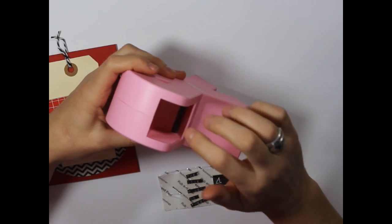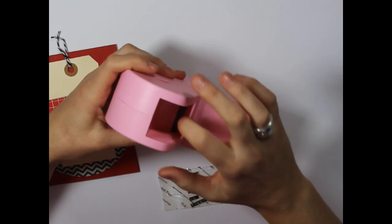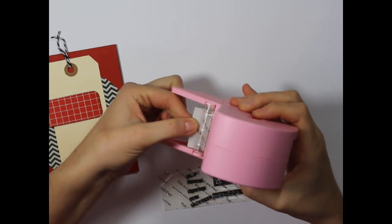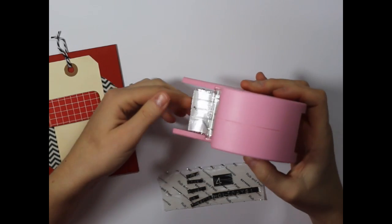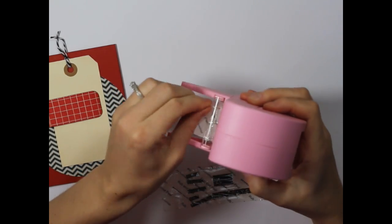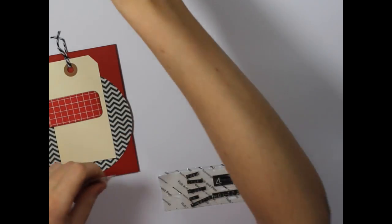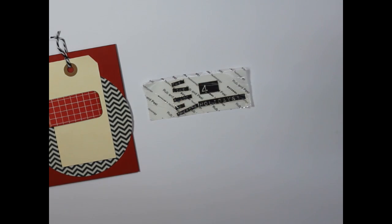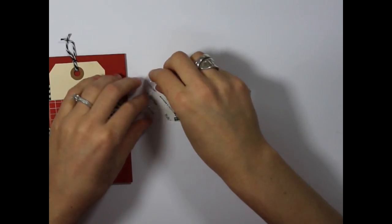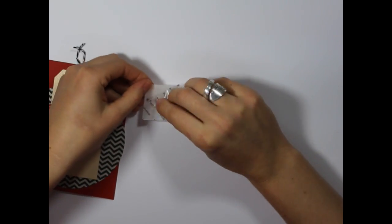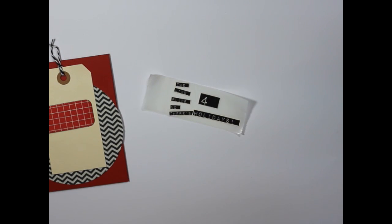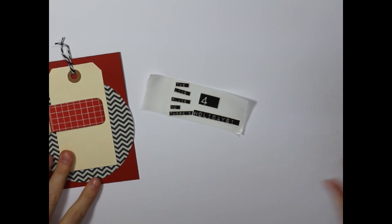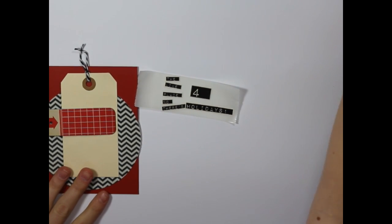You just place whatever you want to be adhered through the little machine and pull the sticker through, and it will only put the adhesive on the back of your elements. Then you can tear that right off. So basically that's what we have so far. I'm just going to remove the protective covering.